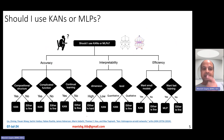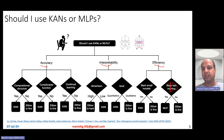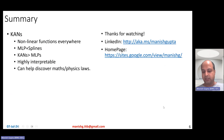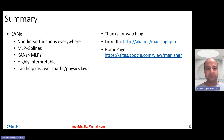You might wonder whether to use KANs or MLPs. There's an interesting flowchart for this decision. Broadly, KANs are good for accuracy, interpretability, and efficiency compared to MLPs. Faster training is the only situation where you should surely look into MLPs. Otherwise, in most cases either choice doesn't matter much, or you can go ahead with KANs. If you're using pre-trained models, KANs aren't great since there are no pre-trained KANs at the moment, but if training from scratch, prefer KANs.